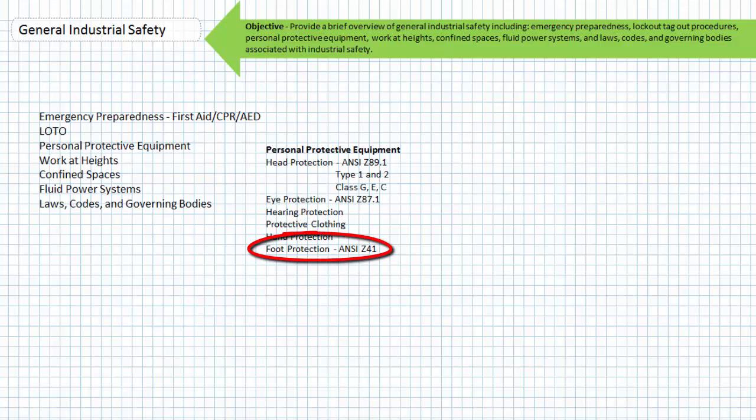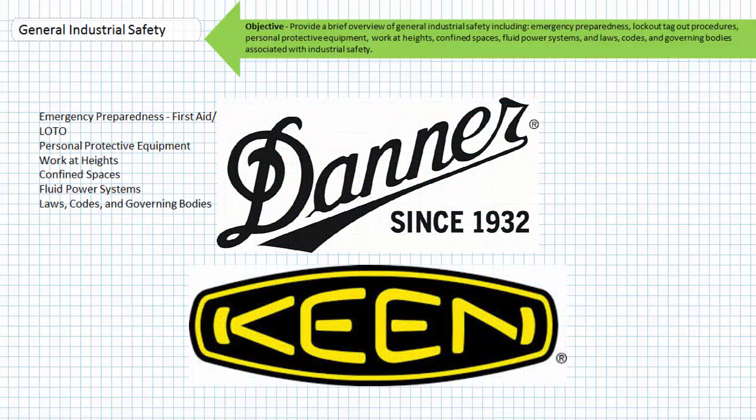Foot protection. Industrial environments are especially unforgiving on feet, so it is a common practice to wear safety toe boots with oil-resistant soles. The standard governing foot protection is covered in ANSI Z41. A shout-out goes to both Danner Boots and Keene Footwear in Portland, Oregon for making awesome boots in the United States.